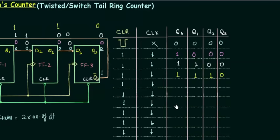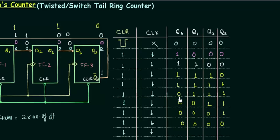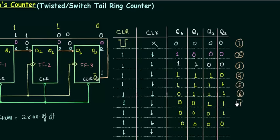Continuing in the same way for subsequent falling edges, the outputs are: 1, 1, 1, 1 — then 0, 1, 1, 1 — then 0, 0, 1, 1 — then 0, 0, 0, 1 — and then 0, 0, 0, 0, which is the same as state number 1. So the 8 states are: state 1 (0,0,0,0), state 2 (1,0,0,0), state 3 (1,1,0,0), state 4 (1,1,1,0), state 5 (1,1,1,1), state 6 (0,1,1,1), state 7 (0,0,1,1), state 8 (0,0,0,1), and back to 0,0,0,0. You can see we have 8 states in Johnson's counter — this is one of the advantages.